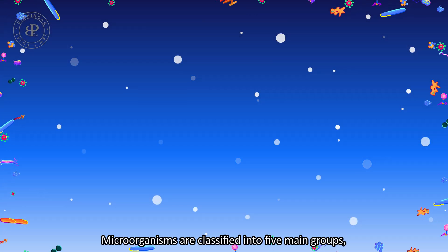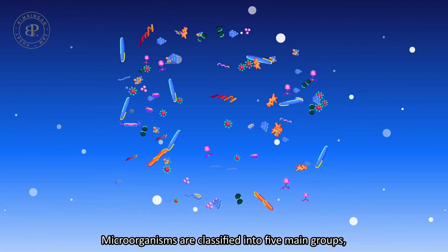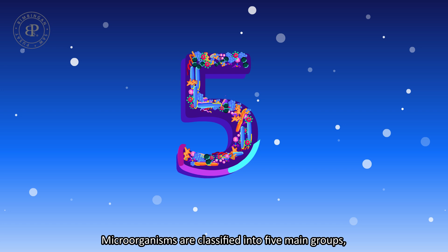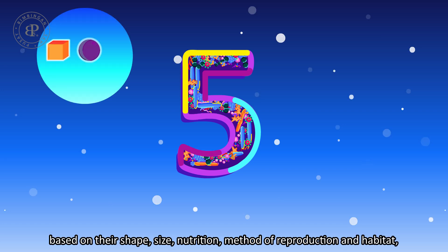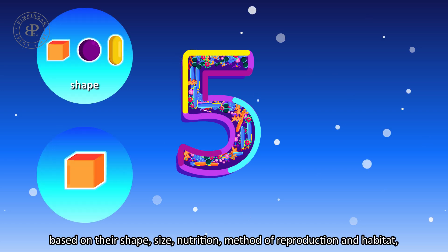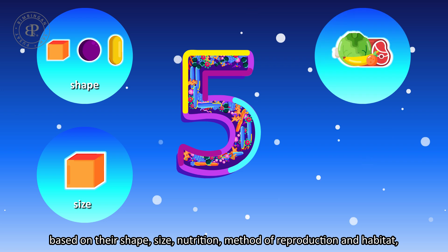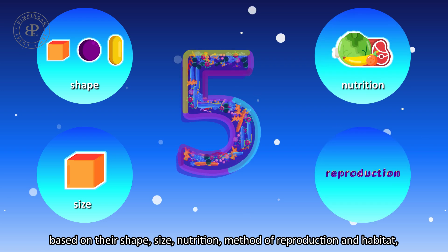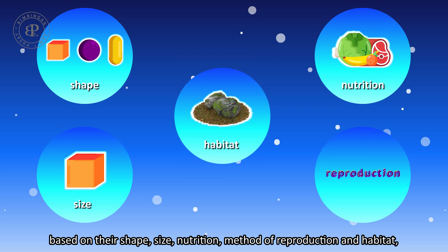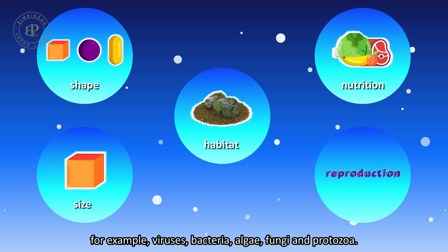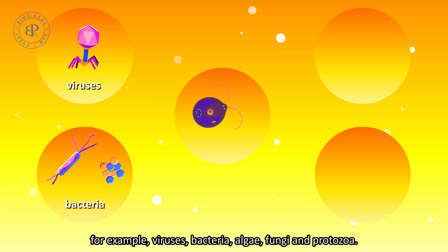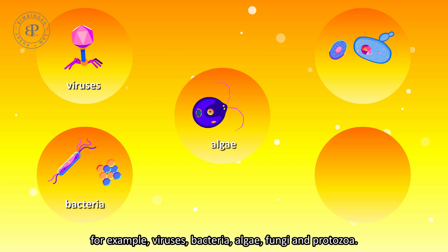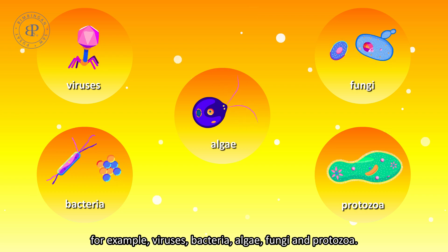Micro-organisms are classified into five main groups based on their shape, size, nutrition, manner of reproduction, and habitat. For example, viruses, bacteria, algae, fungi, and protozoa.